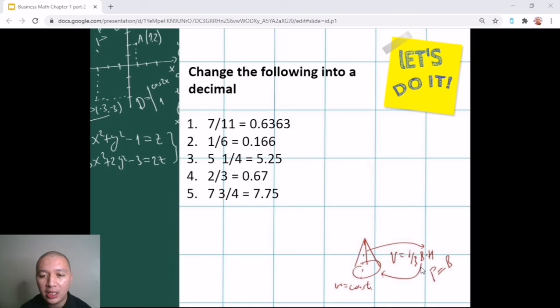And for the fifth question, you would have to convert it first into an improper fraction before you can answer it to 7.71.